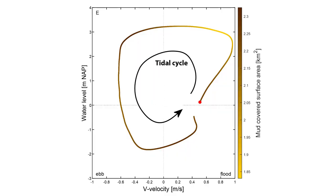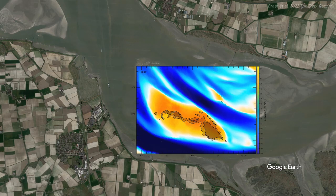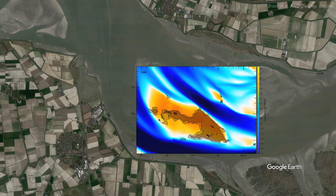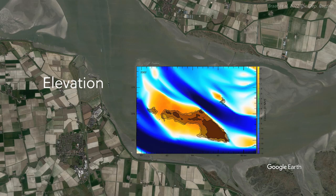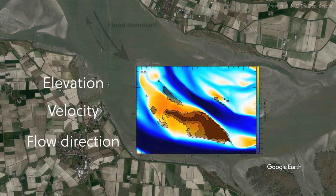Model results show that deposition on mud flats occurs just after high tides, in areas shielded from high flood velocities. This indicates that mud accumulation is mostly controlled by elevation, flow velocity, and flow direction.